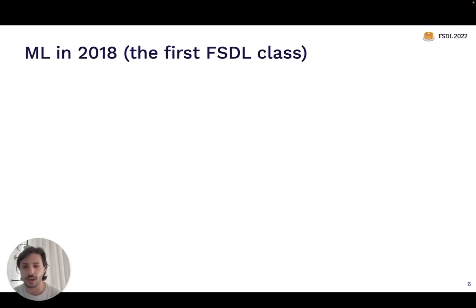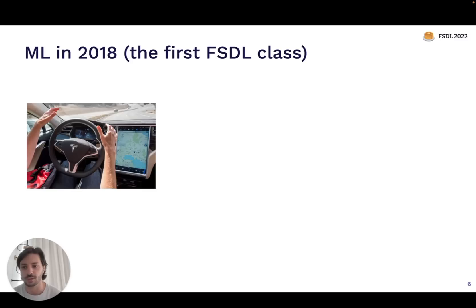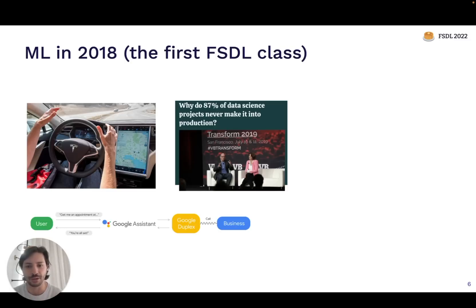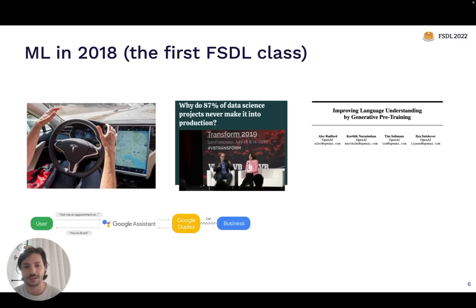In 2018, a lot of the most exciting ML-powered products were built by the biggest companies. You had self-driving cars starting to show promise, and systems like translation from big companies like Google that were really starting to hit the market effectively. But the broader narrative was that very few companies were able to get value out of this technology. On the research side, GPT-3 is now becoming mainstream, but in 2018, GPT-1 was one of the state-of-the-art examples of language models.